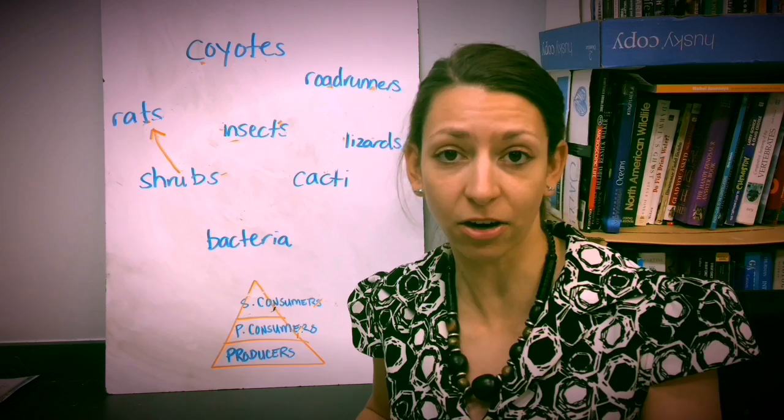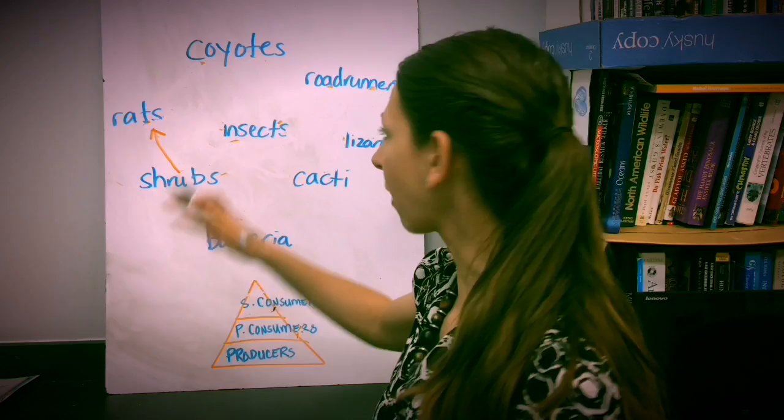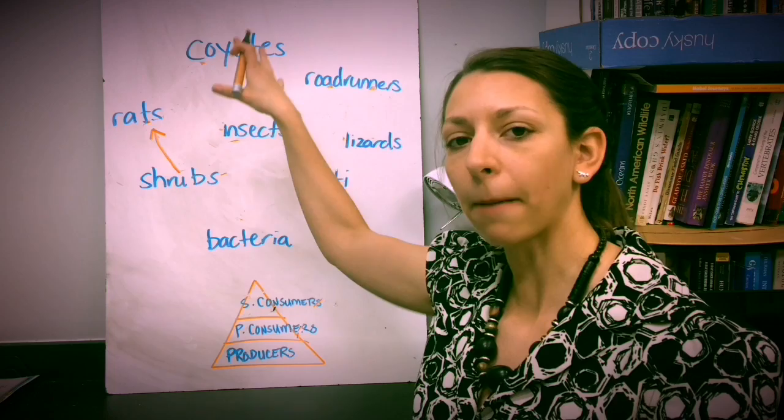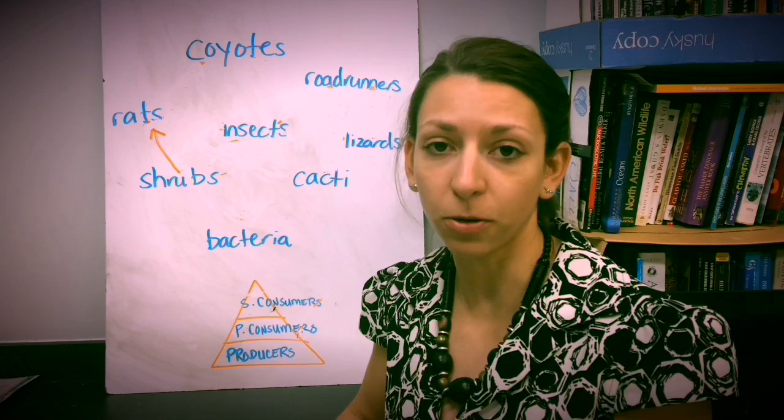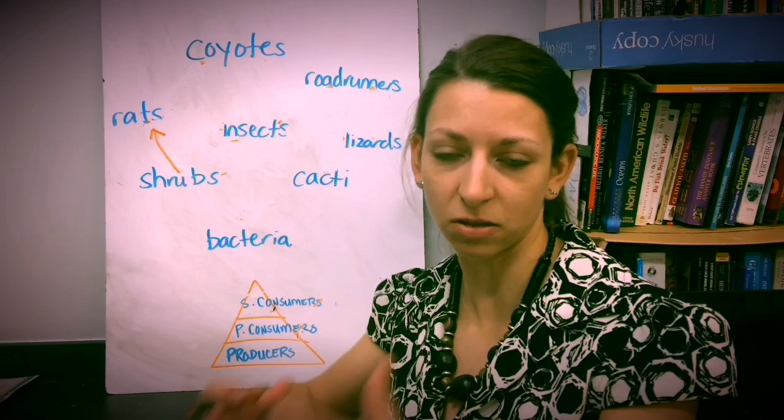So in this particular food web, I've got all my organisms in my environment. We're going to put the producer sort of towards the bottom, our consumers up, and we're going to try to put our top predators, our secondary and tertiary consumers up at the very top. Now, it depends on how you arrange this in your particular food web and what ecosystem you have. And again, sometimes organisms can fit into multiple levels, so this won't always be concrete.